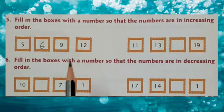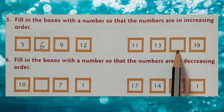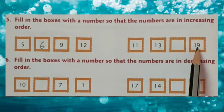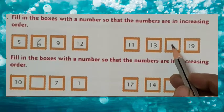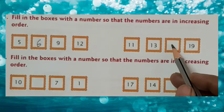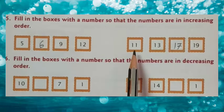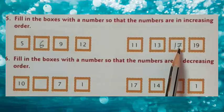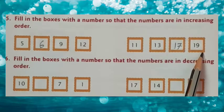Now the next question: 11, 13, empty box, 19. You have to fill a number between 13 and 19. You can write any number — 14, 15, 16, 17, or 18. I will take 17. See: 11, 13, 17, 19 — from 11 to 13, the number increased; from 13 to 17, it increased; from 17 to 19, it increased. So the numbers are arranged in increasing order, that is from small to big.